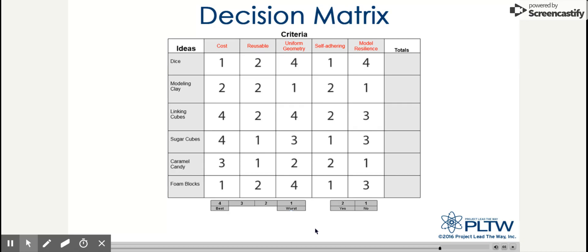Now let's add up each row to determine which material is best for creating a model of a puzzle piece. Type in your answer for each material in the totals column.